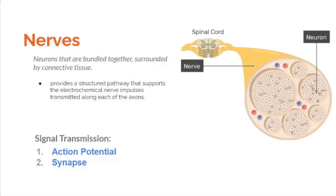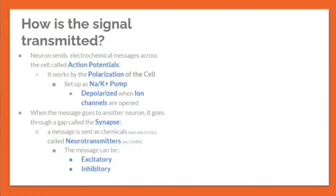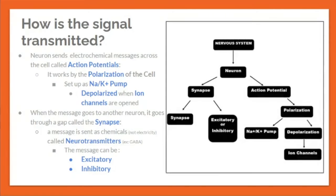Nerves are neurons bundled together and surrounded by connective tissue. This arrangement provides a structured pathway that supports electrochemical nerve impulses transmitted along each of the axons. These nerve impulses or signals are transmitted through action potentials and the synapse.